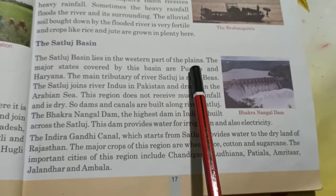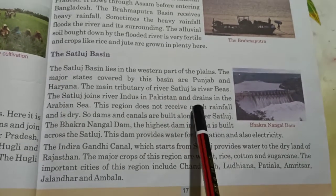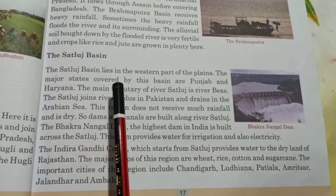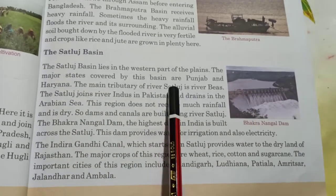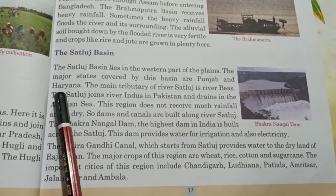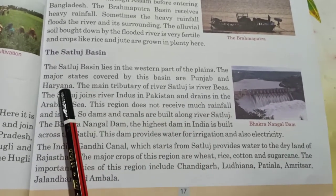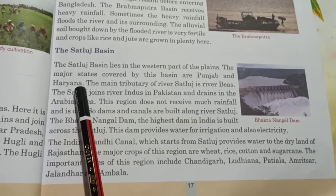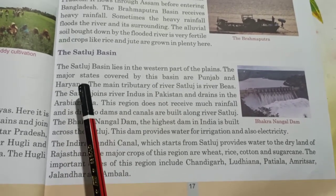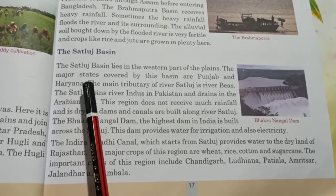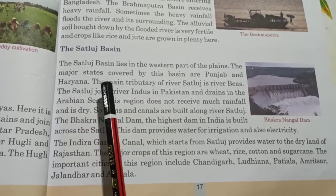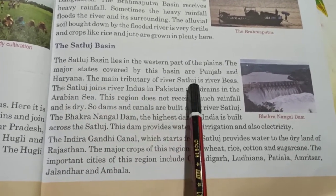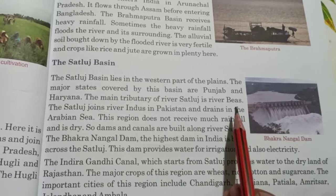The Sutlej Basin lies in the western part of the plains. The major states covered by this basin are Punjab and Haryana. The main tributary of river Sutlej is river Beas.